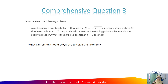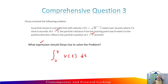The question is: what expression should DVI use to solve the problem? We will apply integration. At t equal to 2, we start from t equal to 2 to t equal to 7, integrating the velocity V(t) dt. This is the expression — no need to solve the problem, just write the expression only. So this is the answer.